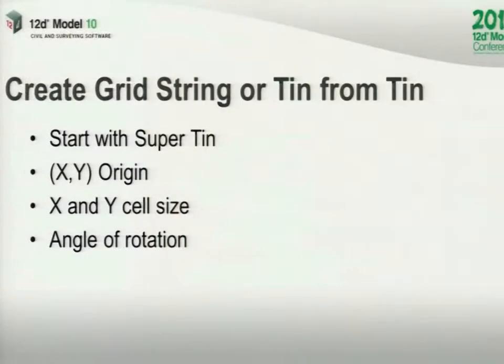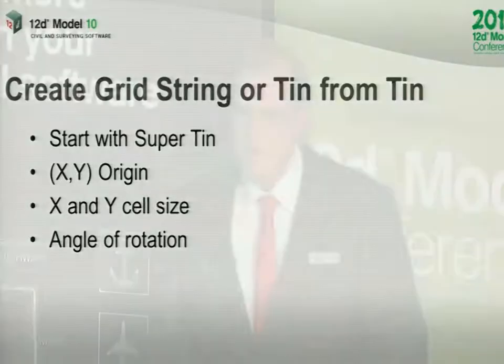Another way of creating these things is you may have a standard TIN. What you can then do is produce what we call a grid string or a grid TIN, where it's actually sampling at a regular interval. People were running this to get data they could put out to other packages that only take a grid — things like ChewFlow, those sort of packages only work with a grid. So in this case, this operation can start with a super TIN or a TIN, and again it's just saying an origin, a cell size, an angular rotation. It goes and generates a grid string or a grid TIN, because then we can work much more rapidly with those. The whole idea is just to make easy, much faster things we can now do in version 10, if your data suits this sort of thing.